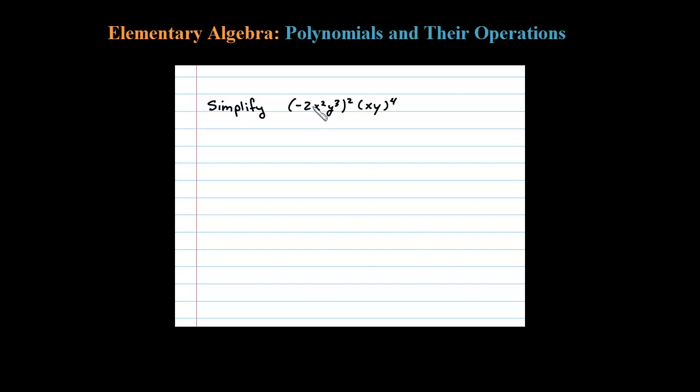Here we're asked to simplify. Notice it's all multiplication, so when it's all multiplication like that, we're going to raise all those terms to the second power. So here we're going to take negative 2 squared, x squared squared.